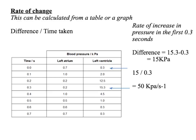This time we're going to do a rate of change using a table — perhaps a little bit more tricky. We're going to use the left ventricle and look at the rate of increase in pressure in the first 0.3 seconds. The pressure before the ventricle contracts is 0.3, and the pressure after the ventricle is fully contracted is 15.3 kilopascals.